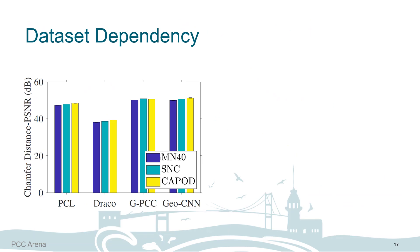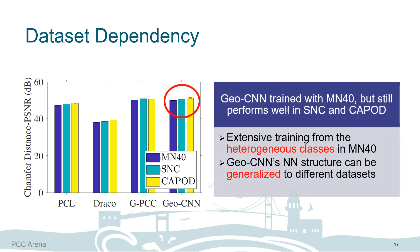Next, we are concerned about the data-driven nature of GeoCNN and ML-based PCC algorithms in general, so we investigate dataset dependency. As expected, the quality of SP-based PCC algorithms is not affected by different datasets. For GeoCNN, which is ML-based, we trained it with ModelNet40, but it still performs well on other datasets. We identify two possible reasons: over half the classes in ShapeNet Core and CAPOD overlap with ModelNet40, and GeoCNN's neural network structure may generalize well to different datasets.